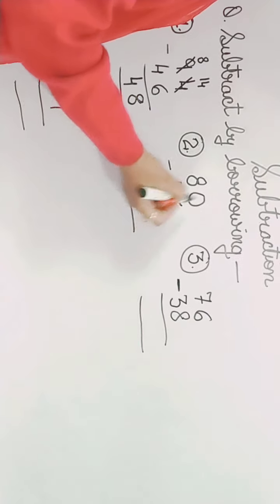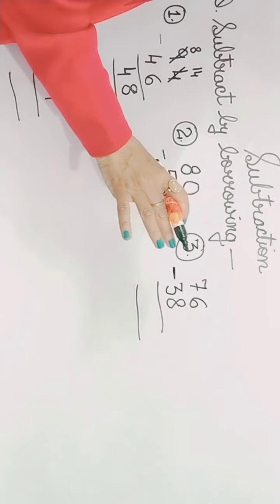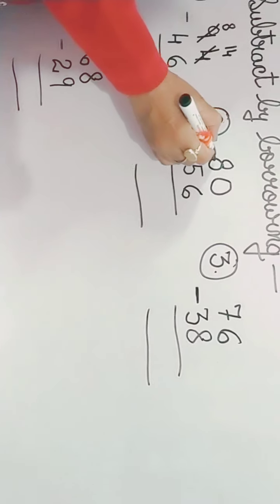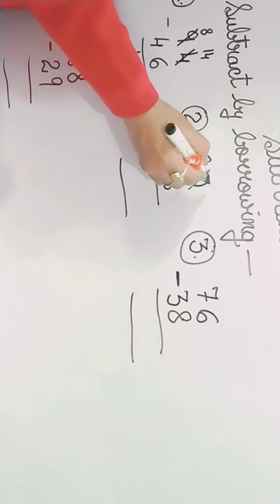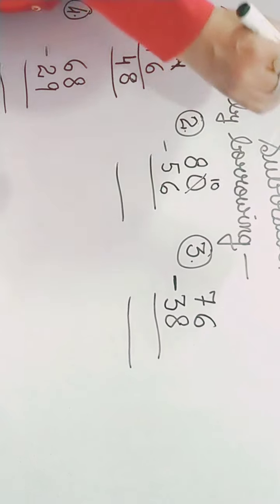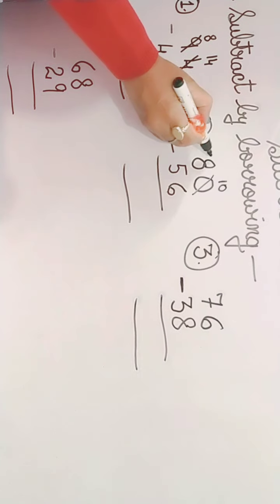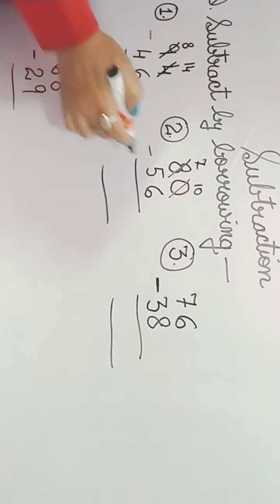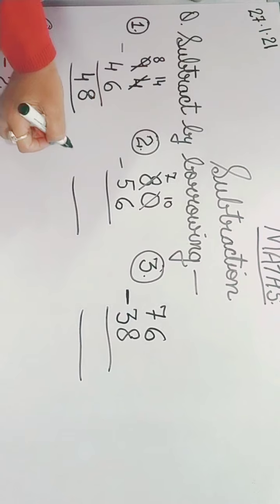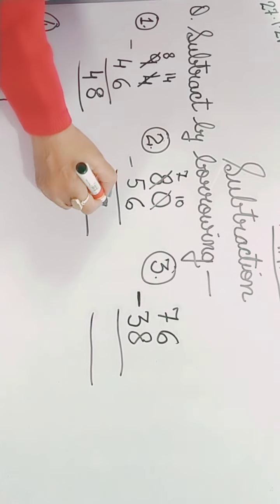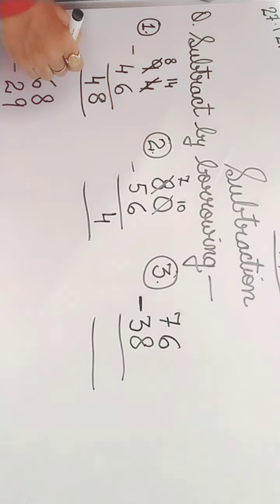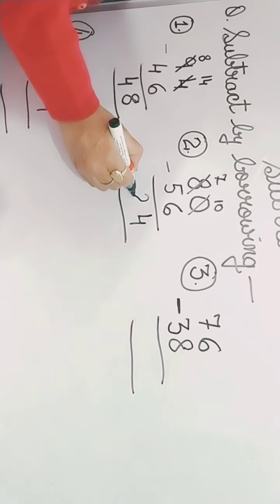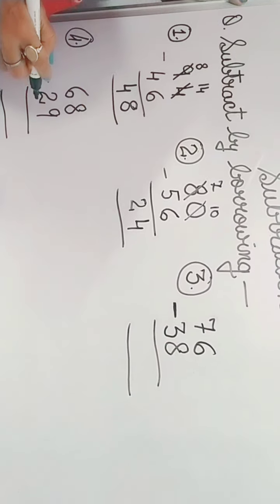80 minus 56. Now this is 0, 0 means nothing, and 6. You cannot minus 6 from 0. So we will borrow one number from 8. We will cut this 0 and write here 10. And 8 में से 1 इधर borrow कर दिया, so we cut this and write here 7. Right? Now 10 is bigger than 6. Now you minus 6 from 10, so it is 4. And you minus 5 from 7, so it is 2. Understood?